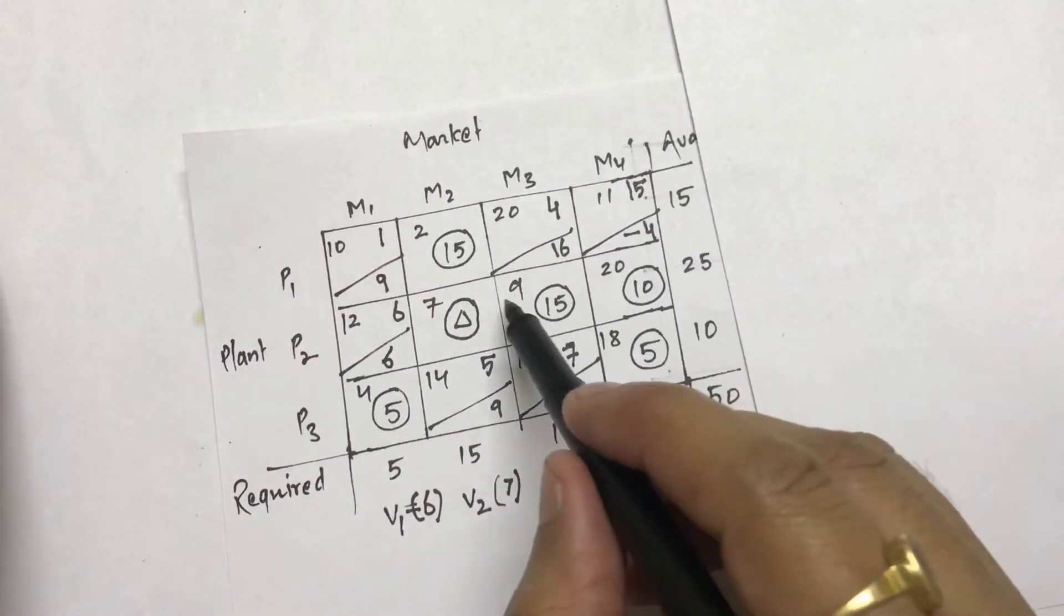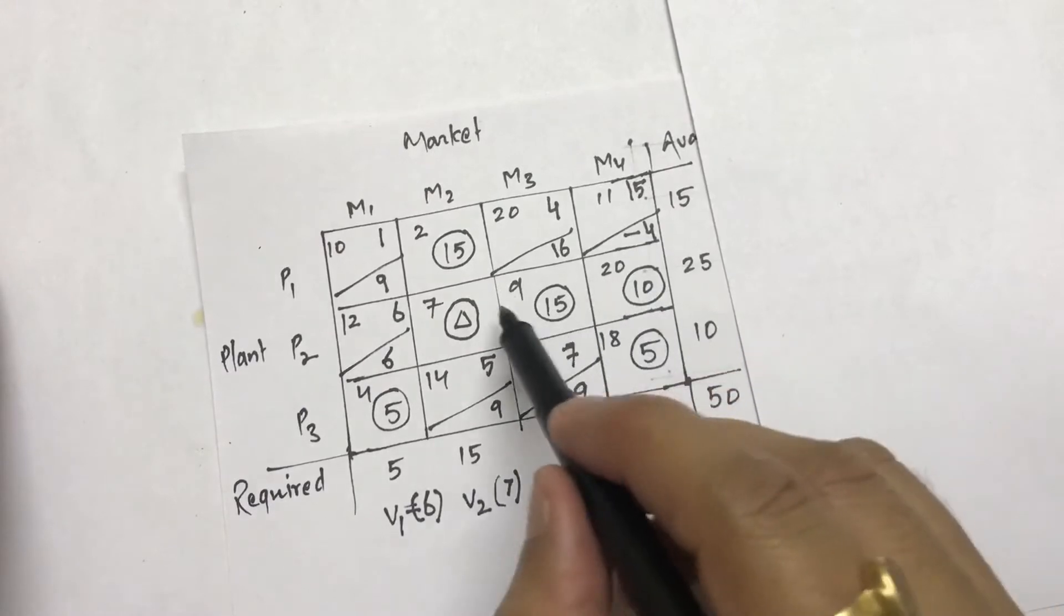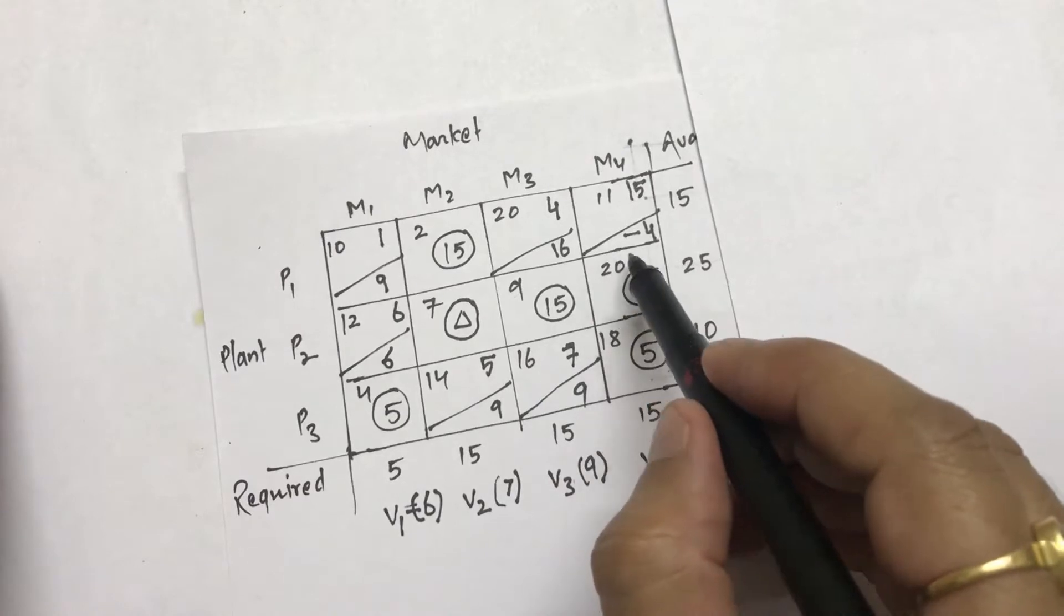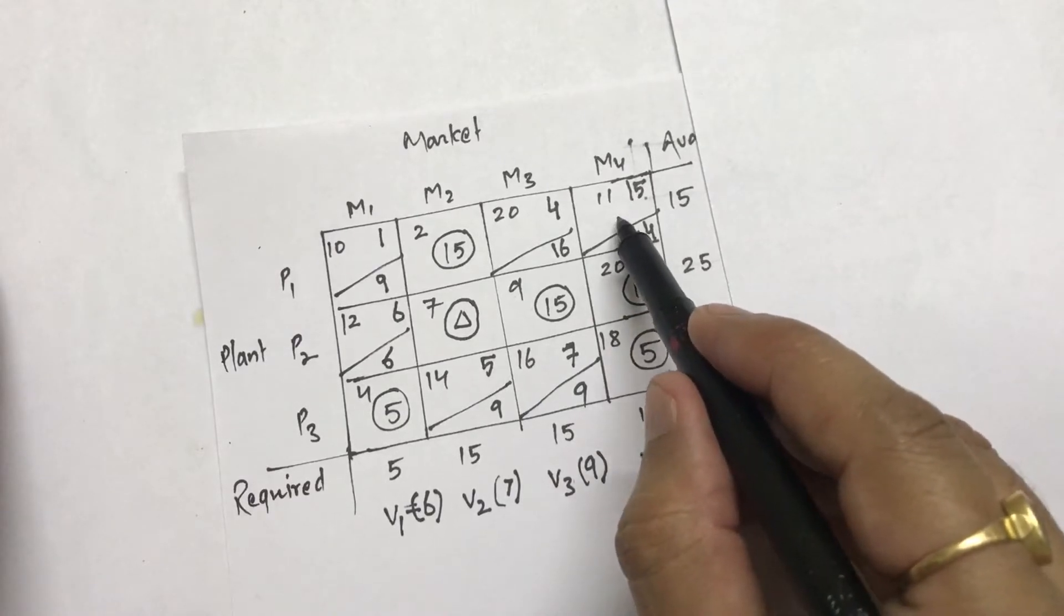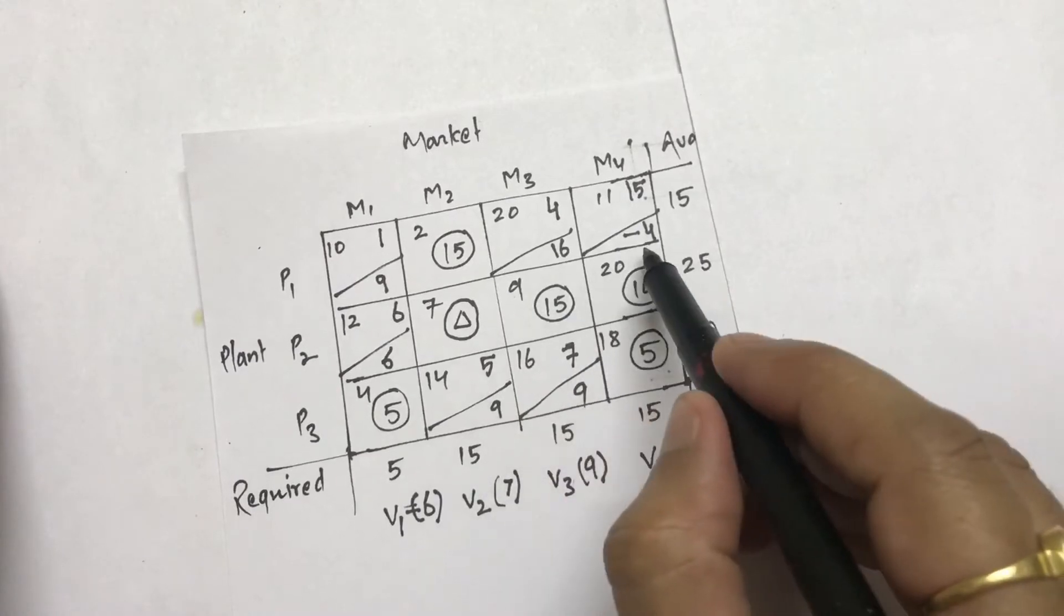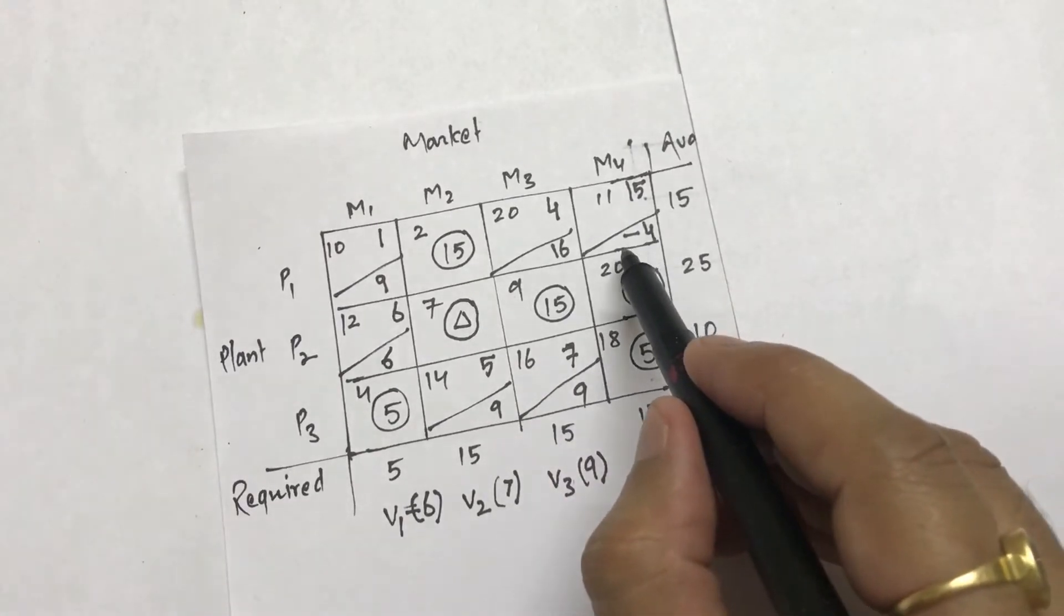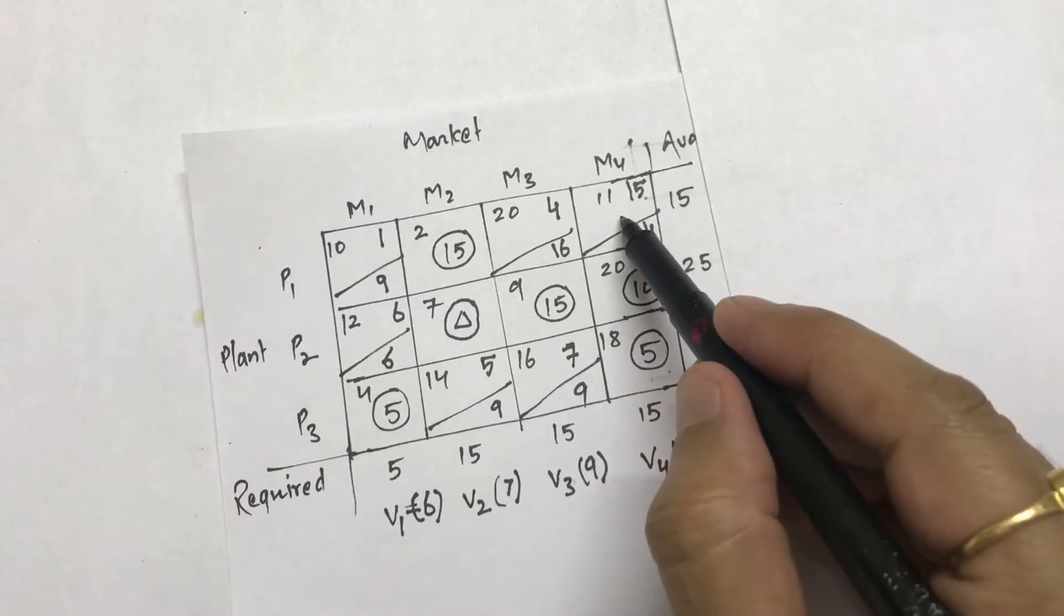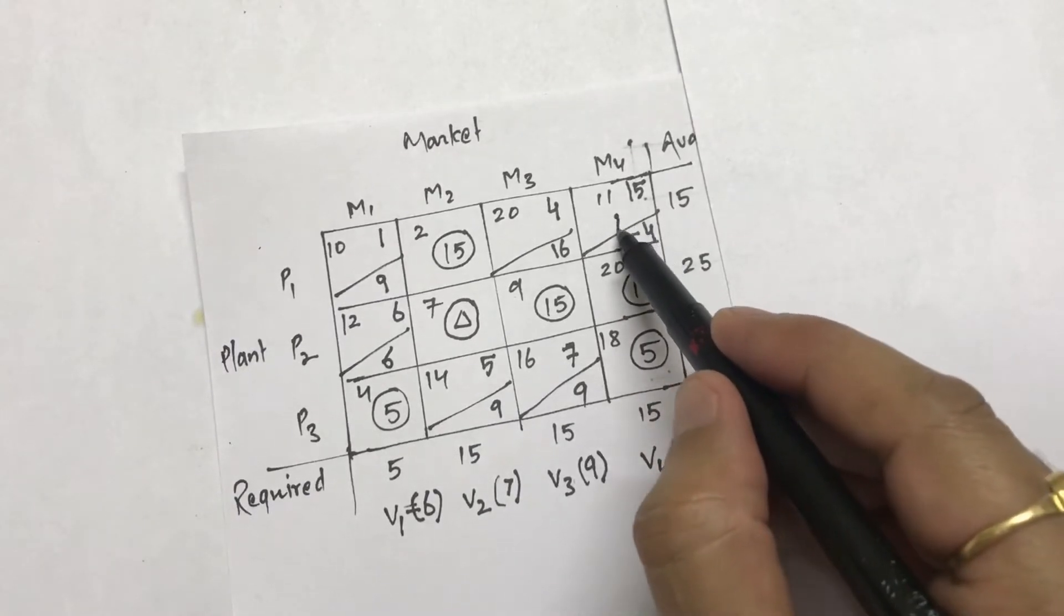That loop can be more or less clockwise, and you can also form it anti-clockwise if required. You should always start with the negative cell. If you're finding two negative cells, then always start with the largest negative, leave the least negative because that can automatically be removed. So let's start from this particular cell.